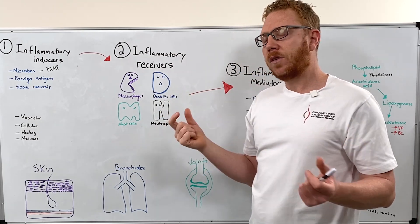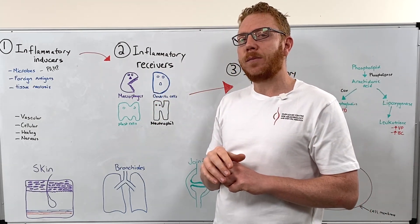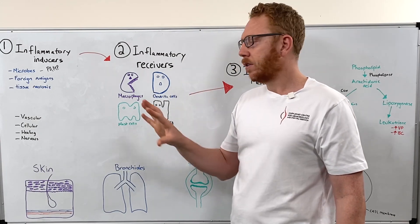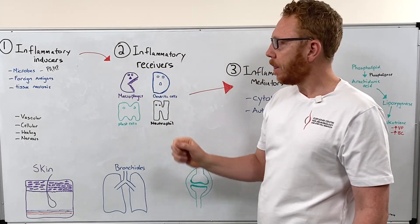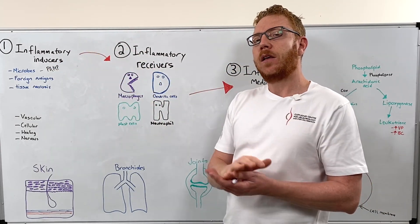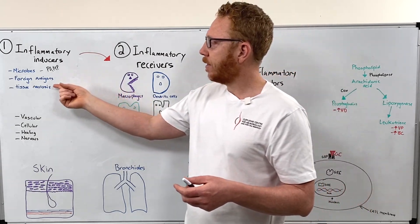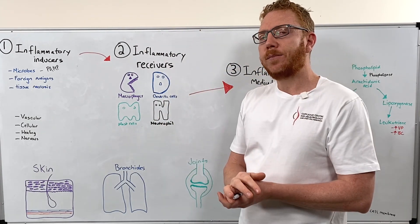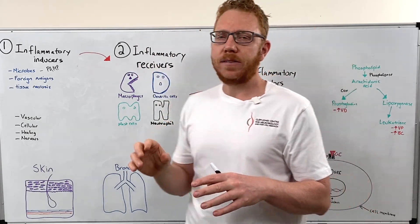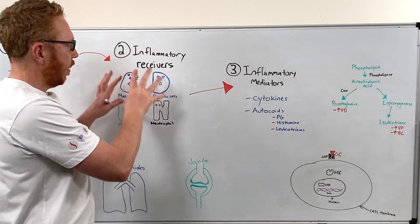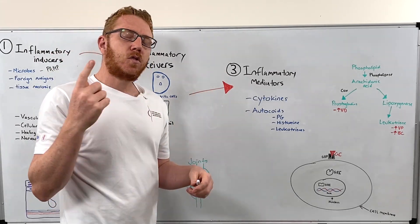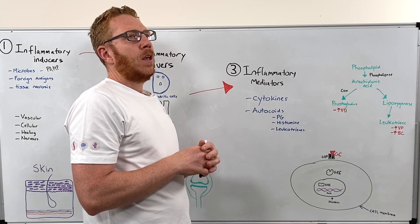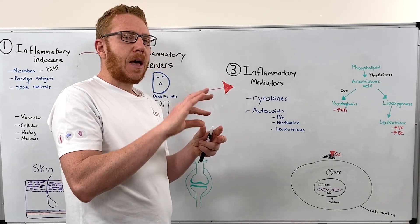Then we have receivers. These are immune cells that are located in the body where you're most likely to get cell damage or invasion. Common cells are macrophages, dendritic cells, mast cells, and neutrophils. They're immune cells waiting to get these inducers to come to them. Once these two come together, then we need to bring in more recruits to help with the problem. We need to somehow get a message out, and that message is going to be a mediator.